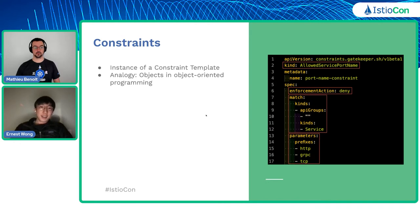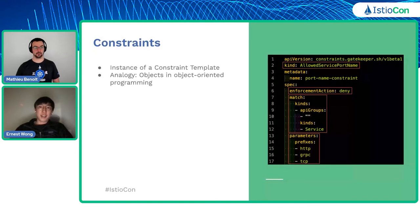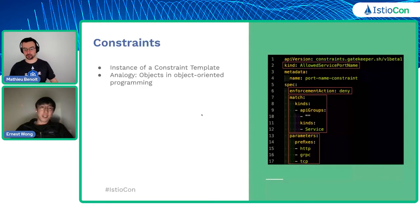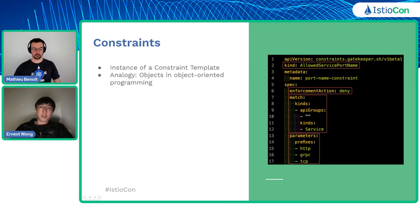Through Gatekeeper's Constraint API, you can create an instance of a policy based on the Constraint Template, specifying the policy name in the Kind field. In the Constraint you can specify an enforcement action — either deny the admission request or dry run the policy to check how many resources are violating before taking further action. You can also specify a match so the policy is only evaluated for certain resource types, define parameters to encourage reuse, and include or exclude specific namespaces for fine-grained control. For example, you might not want to enforce a policy on the kube-system namespace.